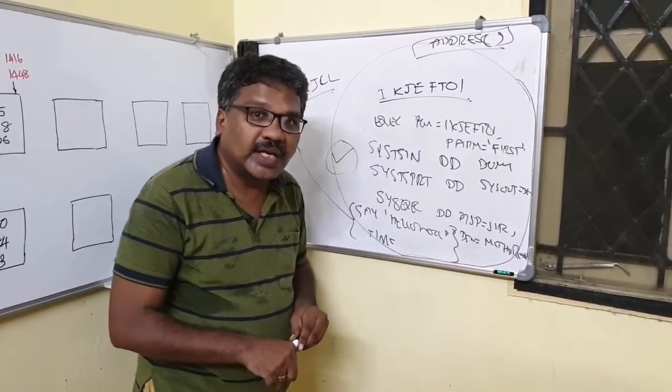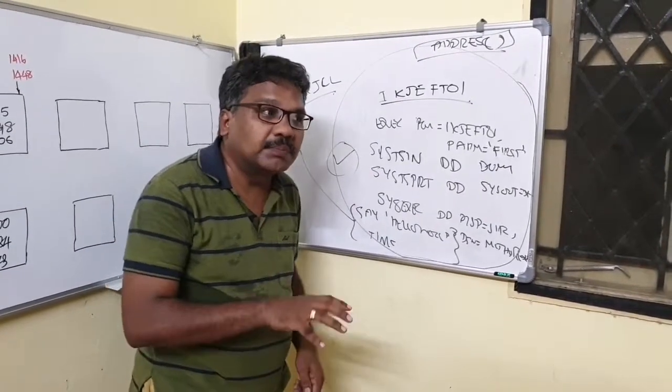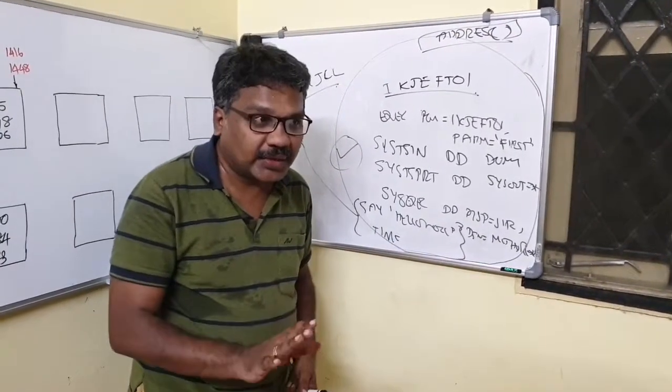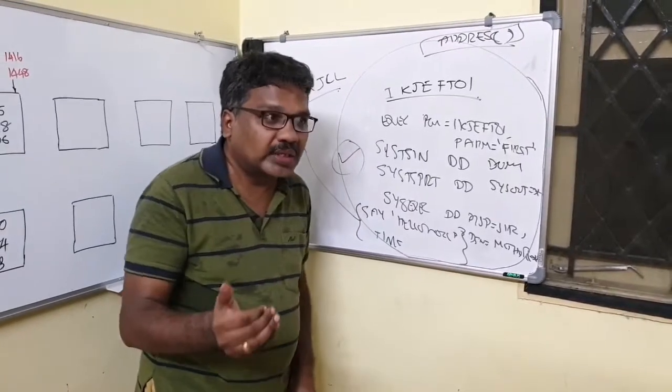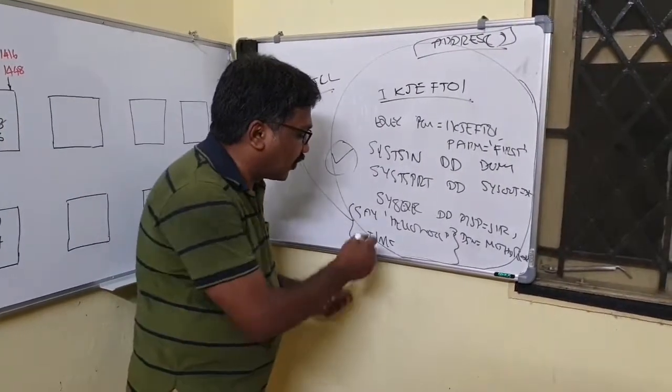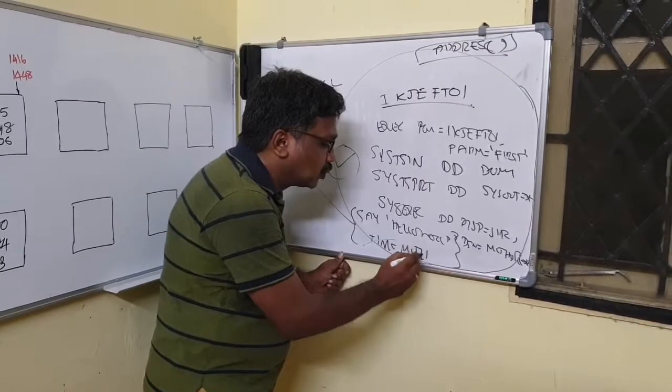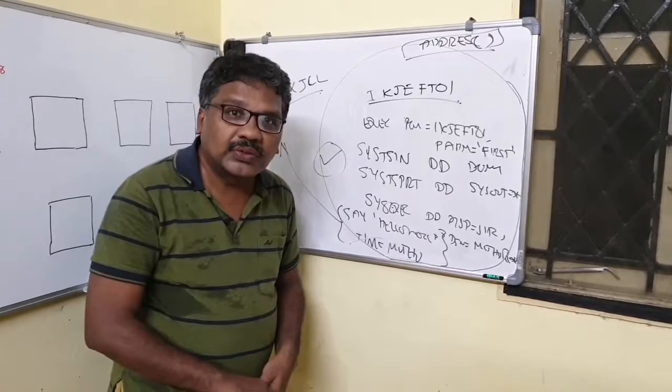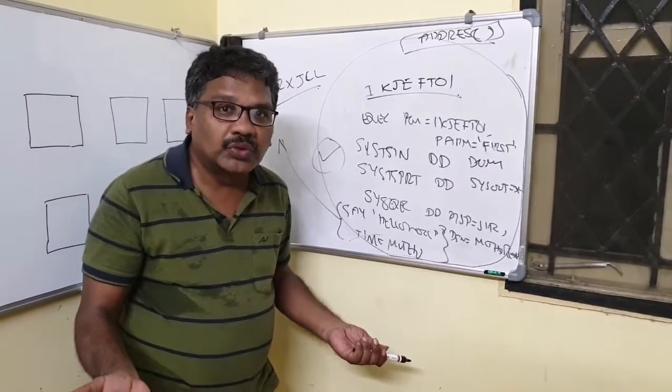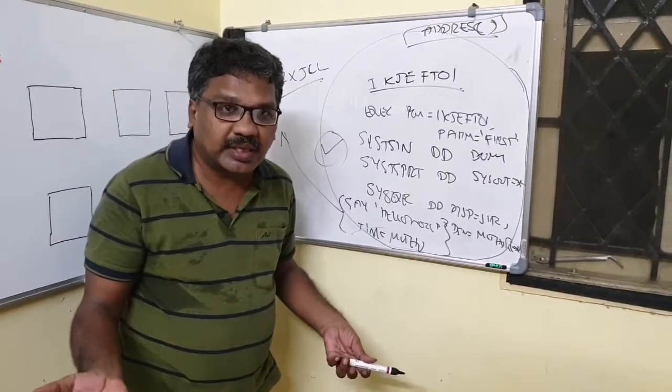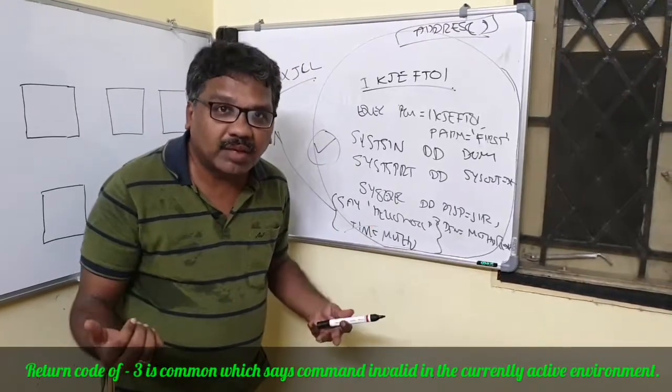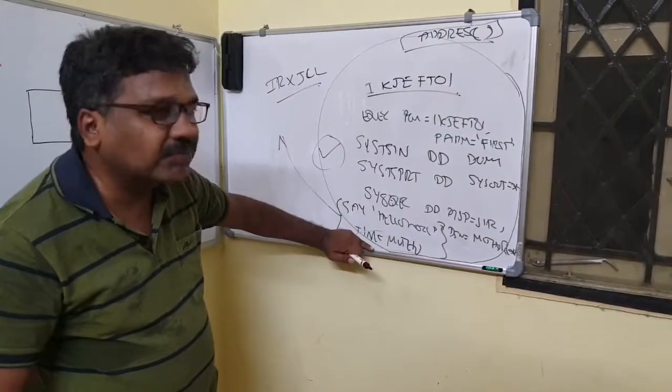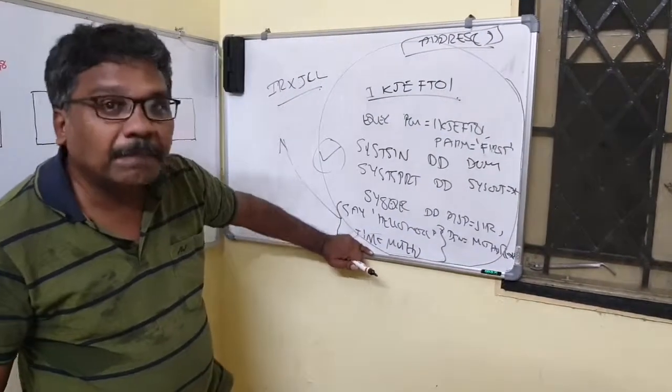So you need to understand, leaving just a small diversion from the topic, so whatever the command you code in REXX program, if it is not a REXX command, what it will do is it will not throw any error, it will simply send it to the environment which is the default environment which is active. So only that environment will throw error. So in this case, like if I code something like MUTU here, MUTU is not a valid command in REXX, so MUTU will go to your TSO.